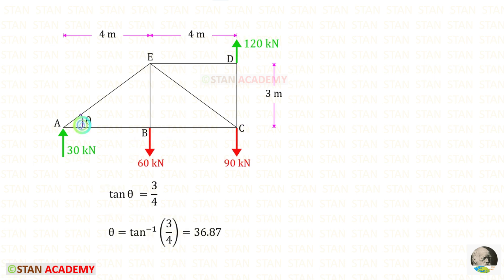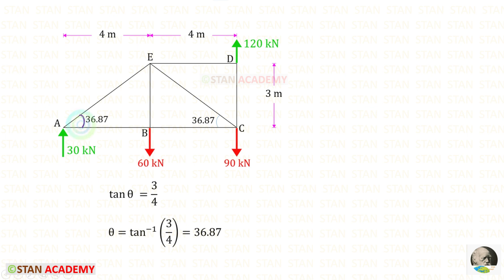We need to find the angle of the inclined members. Keeping this angle as theta and applying the tan theta formula to the triangle: opposite side 3 upon adjacent side 4, giving theta = 36.87°. If this angle is 36.87°, the complementary angle is also 36.87°.